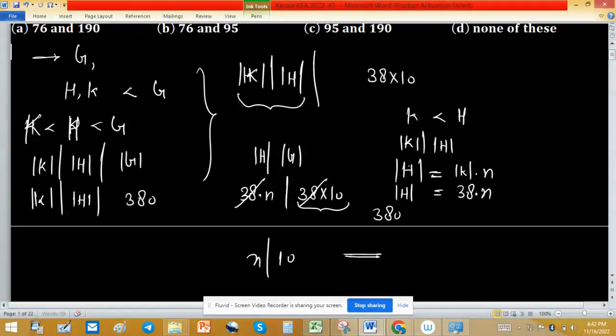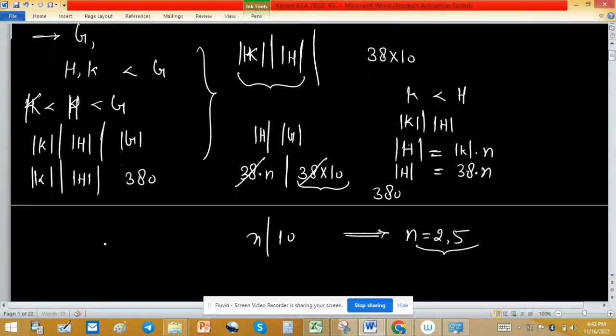So possible value of N is either 2 or 5. So order of H will be 38 into N, where value of N is 2 or 5.